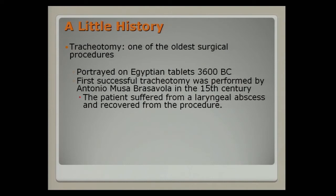A little history: tracheotomy is one of the oldest surgical procedures, actually portrayed on Egyptian tablets dating back to 3600 BC, so it's been around a very long time. The first successful tracheotomy was performed in the 15th century for a patient who had suffered a laryngeal abscess, and that patient actually survived and recovered after the procedure.